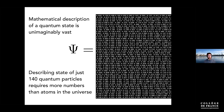If you actually had just 140 quantum particles — like 140 electrons — and tried to describe every possible state they could be in without any approximation or consideration about temperature, you would need more numbers than there are atoms in the known universe. So it seems like a hopeless thing to even attempt.